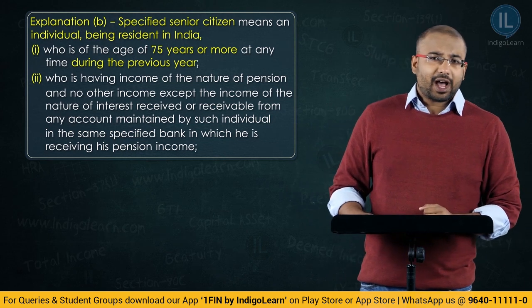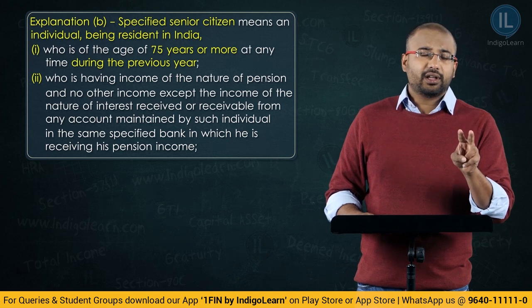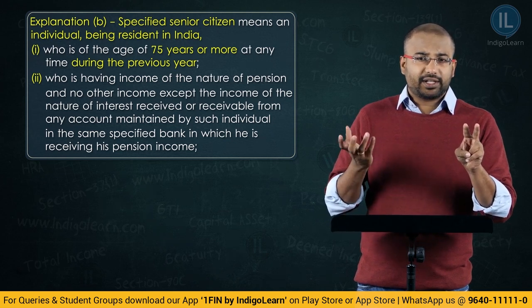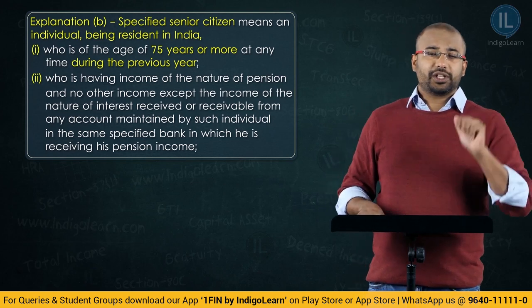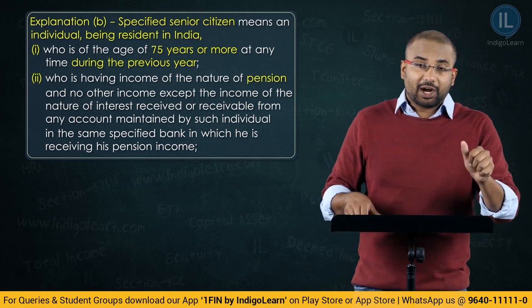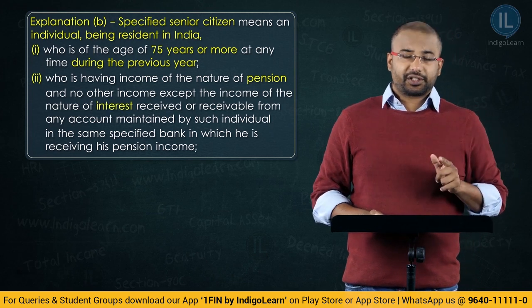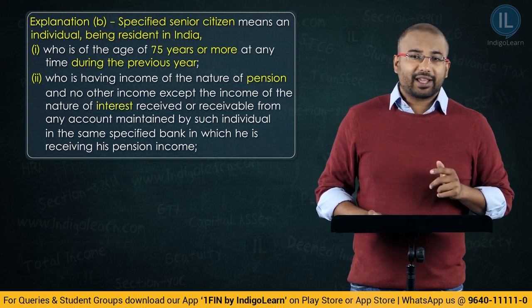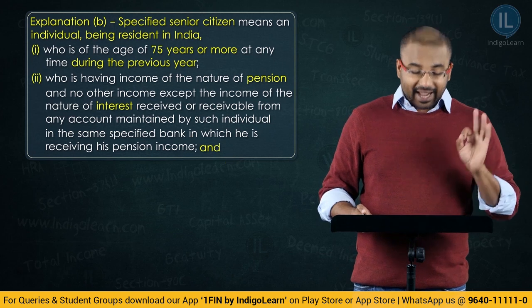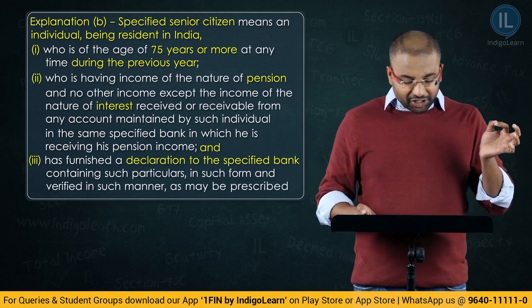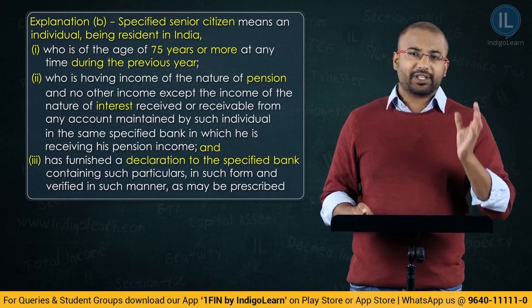So to summarize: what are the two incomes? If received, the senior citizen who has attained 75 will be treated as a specified senior citizen — one is pension income received into this specified bank account, and two is the interest income from that same specified bank. And remember, all three conditions have to be satisfied. Number three: the individual has furnished a declaration to the specified bank containing such particulars in such form and verified in such manner as may be prescribed.